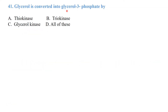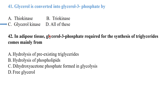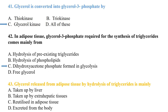Q39: Glycerol is converted to glycerol-3-phosphate by glycerol kinase in adipose tissue. Glycerol-3-phosphate required for triglyceride synthesis comes mainly from glycolysis. Glycerol released from adipose tissue by hydrolysis of triglycerides is mainly taken up by the liver.